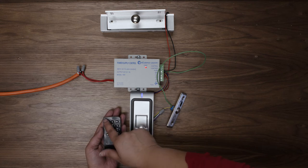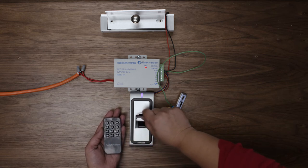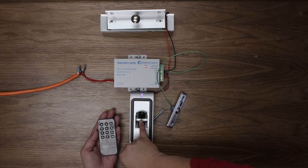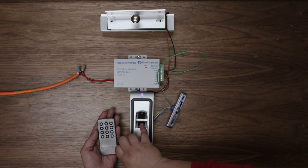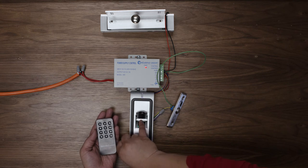Then press star and one to change the admin fingerprint. The light will turn purple. Scan a finger that you won't use to unlock the door. Scan it twice. The purple light should flash after each successful scan.